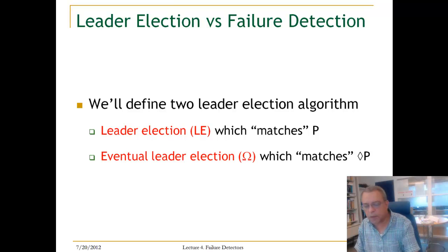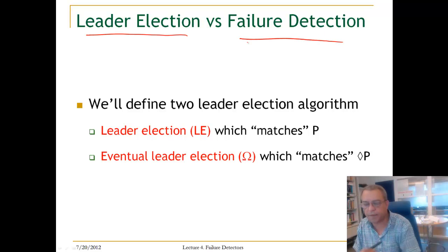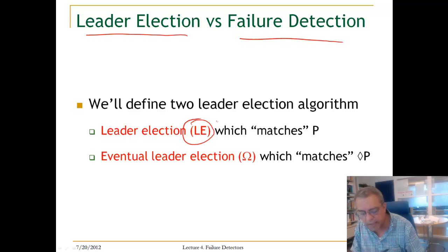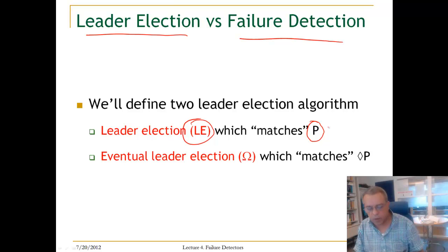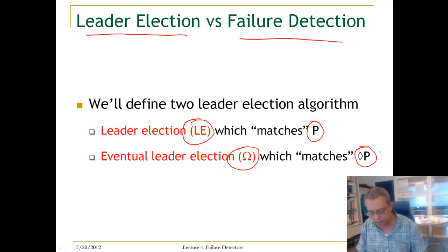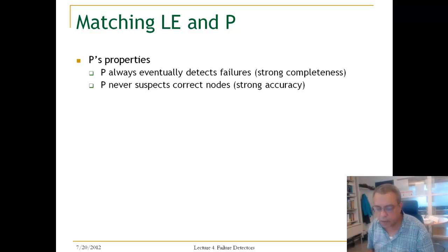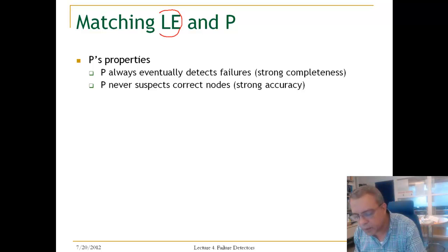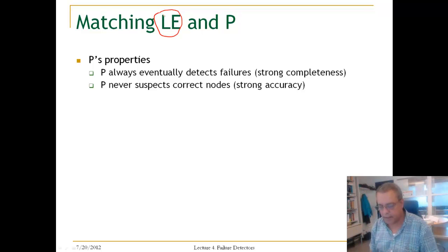When we talk about leader election, there is a correspondence between leader election and failure detection. We will talk about the abstraction Le, which matches a perfect failure detector. We will also talk about an eventual leader election abstraction, normally called Omega, which matches diamond P, the eventually perfect failure detector. So let us now look at Le, which we can call the perfect leader election abstraction.